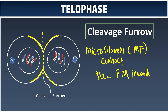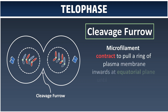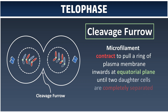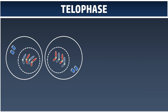The microfilament pulls the plasma membrane inward at the metaphase plate, contracting like a tightening ring — similar to how a ring contracts around something. The ring contracts and pulls inward until the two cells are completely separated. So the microfilament contracts and pulls the plasma membrane inward until we have two separated daughter cells. This is what happens during cytokinesis.